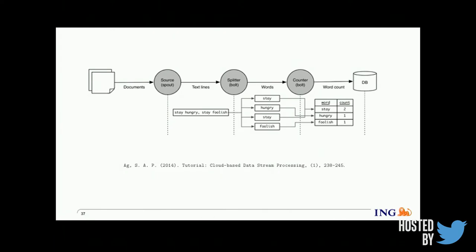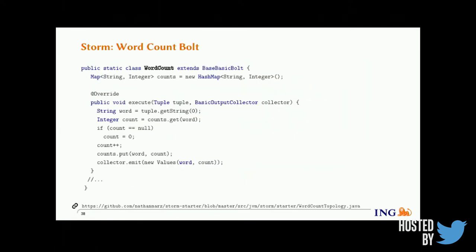As an example with Storm: in Storm, the topology is represented by two different kinds of operators. One is the spout — the source — and the second kind are bolts, which perform transformations on the stream. To implement a bolt, it's similar to the pseudocode shown earlier. In the word count bolt, it receives a tuple and computes the count. Note that it uses a JVM map for state rather than managed state, meaning failure recovery is the responsibility of the bolt itself, not the stream processor. The execute method is like a Java method and can contain any arbitrary code.